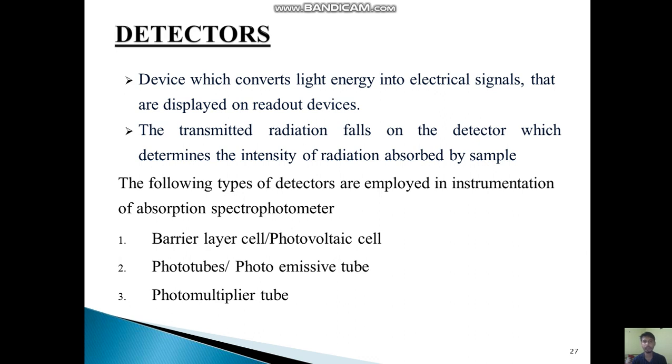Now we will see the detectors. There are various types of detectors. A detector is a device which converts light energy into electrical signals, because we cannot directly read the light energy or how much it absorbs. We need an electrical signal that is displayed on readout devices.